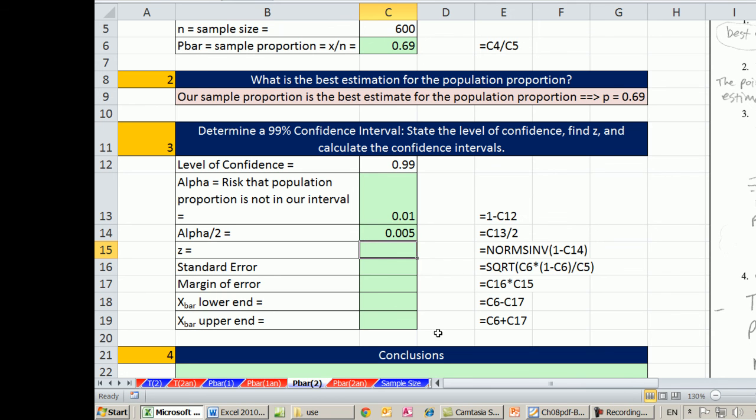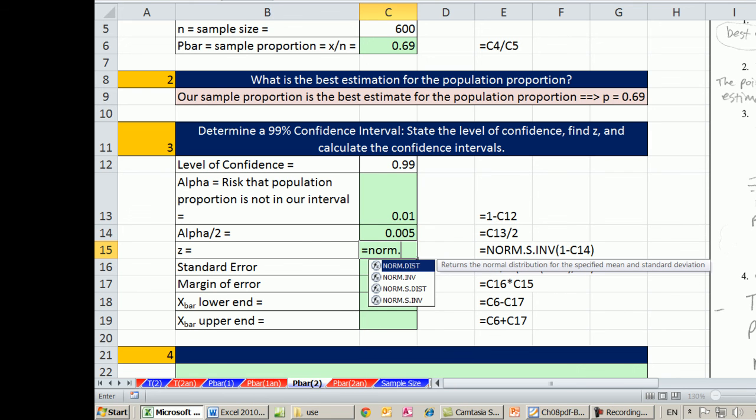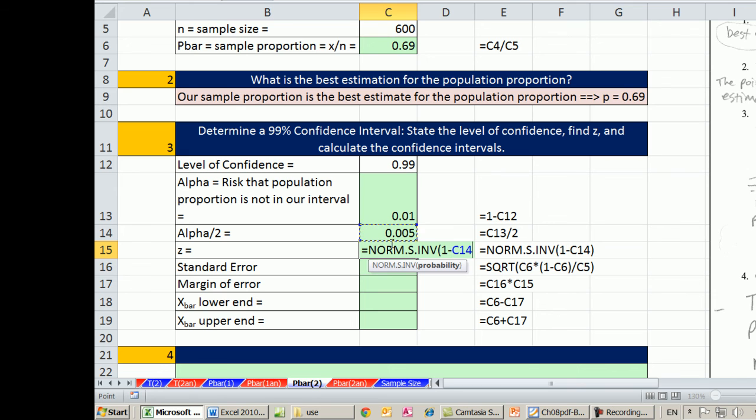Our z, we're going to do not norm as it there. It's norm.s.inverse. Without the dots is the function used in earlier versions. So norm.inverse. So inverse wants a probability. Now notice, this is a teeny little bit of risk on the upper end. So I'm going to say 1 minus that. All these probability functions go from negative infinity up to whatever x bar or probability marker. So there we go. So 2.57. That's our z.